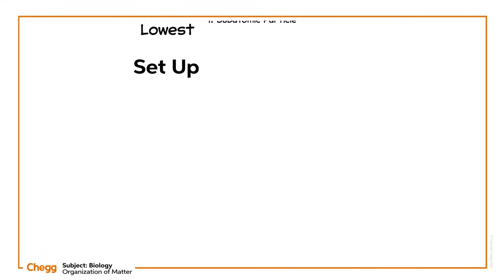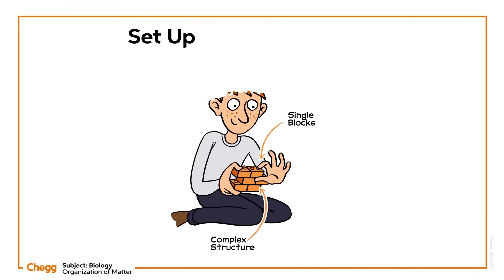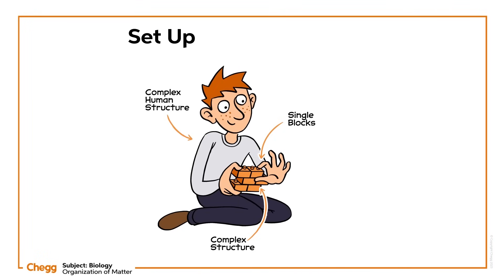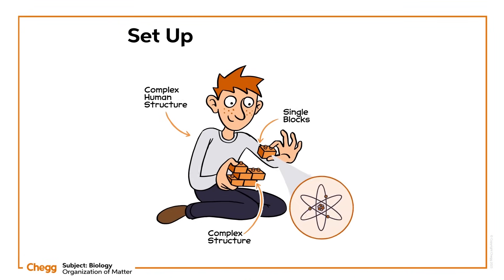Have you ever considered how amazingly complex things can be built from simple building blocks? The Roman Colosseum, the Taj Mahal and almost all of the great structures in the world have been built brick by brick, block by block. In much the same way, as complex as we are, we humans and every organism on earth is constructed ultimately by the bricks of atoms. So let's learn about atoms.